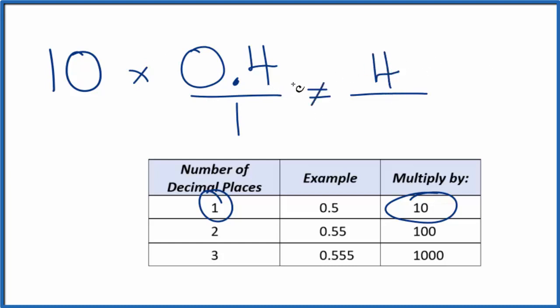But 4, that's not equal to 0.4. We need to also multiply the bottom by 10. 10 times 1, that's 10. Now we have a fraction we can work with. And 10 divided by 10 is 1. So we're just multiplying this by 1. We're not changing the value, just how it's represented.